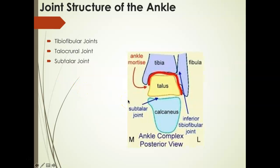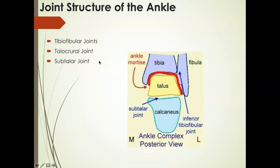We have three joints that make up the actual ankle joint. We have the distal tibial-fibular joint — I say distal because there is a proximal tibial-fibular joint, which we'll discuss with the knee joint. We also have the talocrural joint and the subtalar joint. We'll talk about those independently because they do different things.